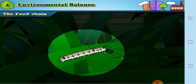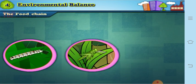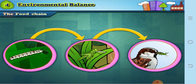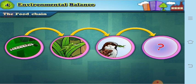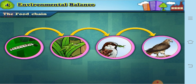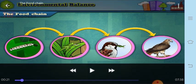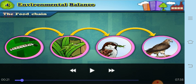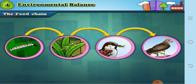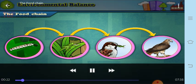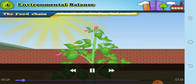Worms also eat plants. So then who eats the worm? A grasshopper. The grasshopper is eaten by a bird. But then who eats the bird? A bird is eaten by a large-sized bird. So you can see that one is eating the other. You must have also seen in nature such types of chains.